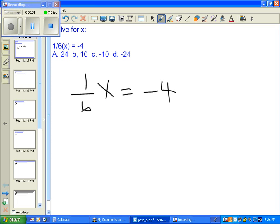We multiply one-sixth x by its reciprocal, six over one, and we multiply that times one-sixth x. We have to take and do that on the other side too.